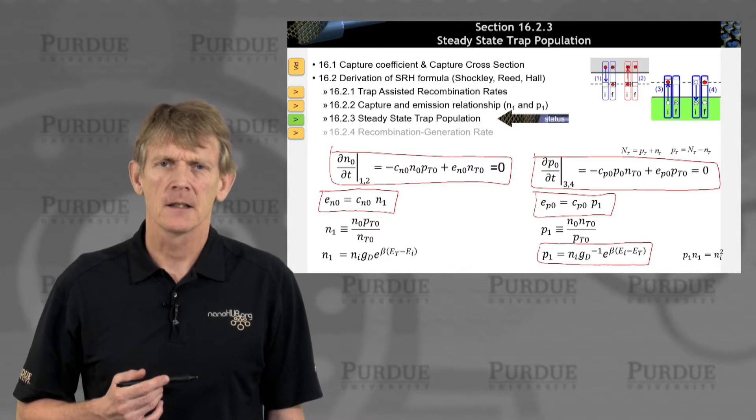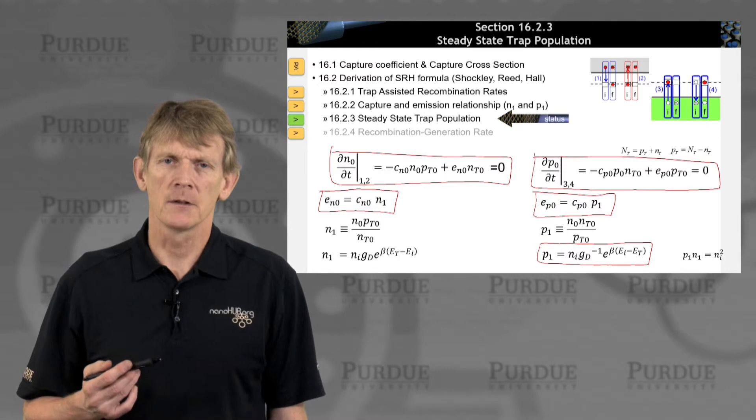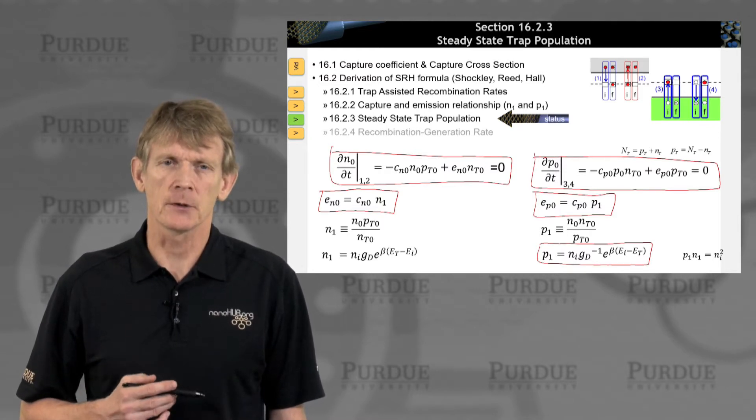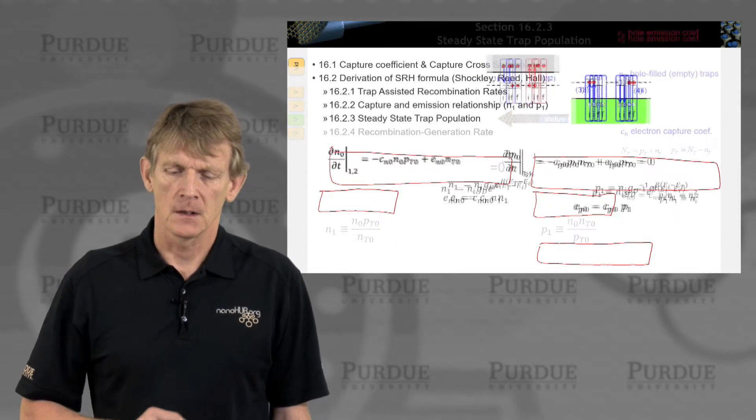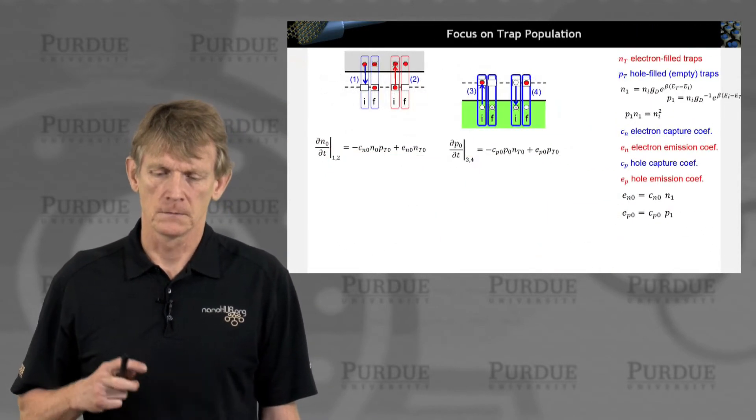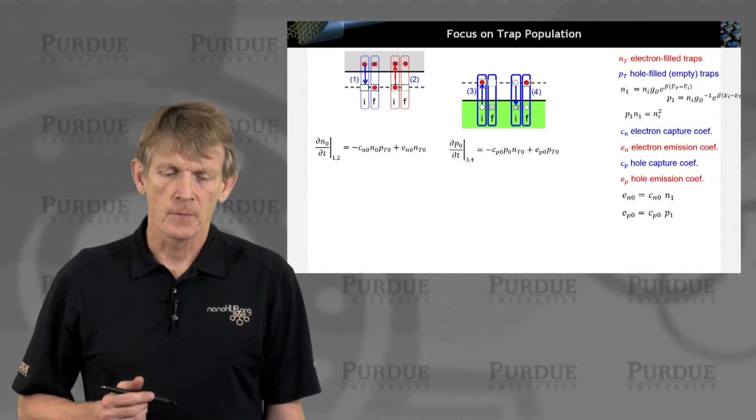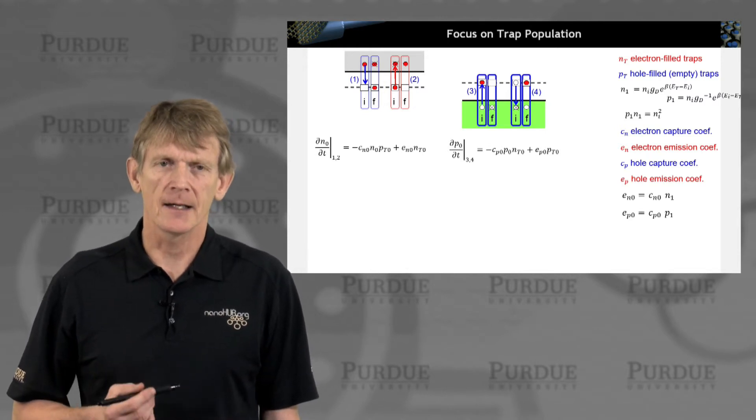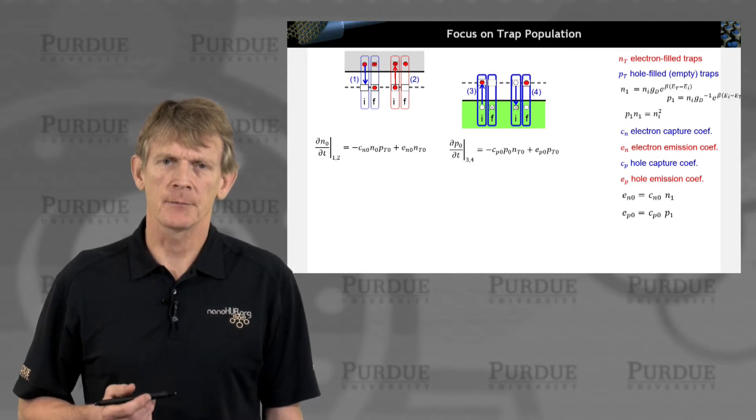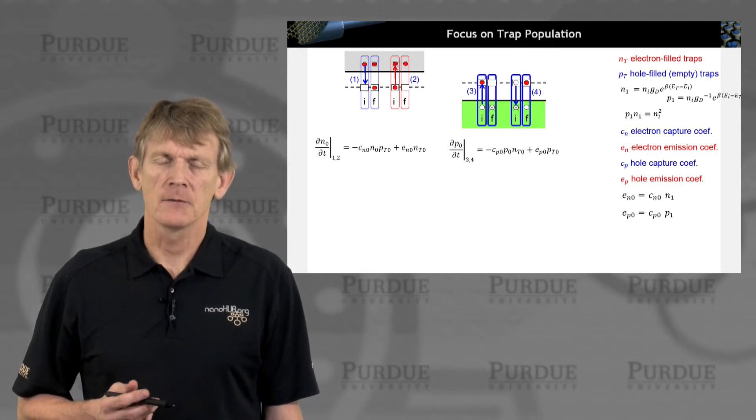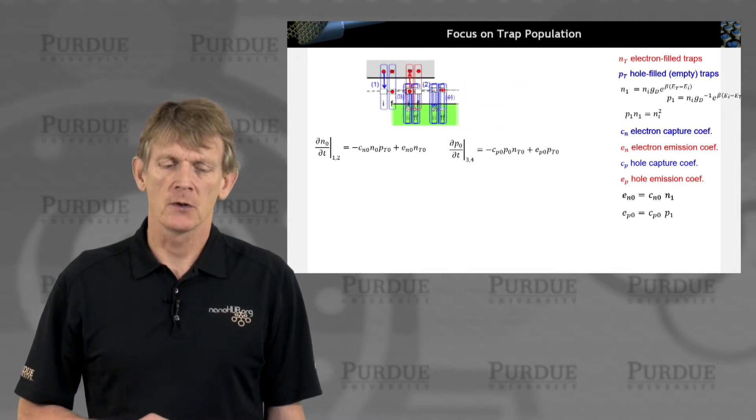Now we're going to calculate the population of these traps given steady-state, not equilibrium. So we're going to begin to take this system out of equilibrium. We're going to start from these expressions that we had from section one, but we're going to focus on the trap population now, meaning we're beginning to combine the point of view between these two views.